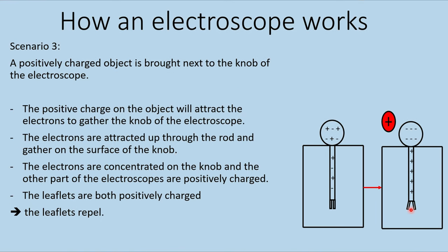Now consider a positively charged object placed next to the knob — not in contact, but nearby. It attracts electrons up from the rod and leaflets; they gather on the knob forming a negative pole, while the leaflets form a positive pole. So the leaflets are both positively charged and they repel.